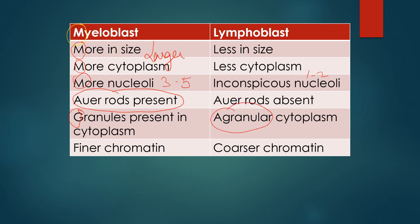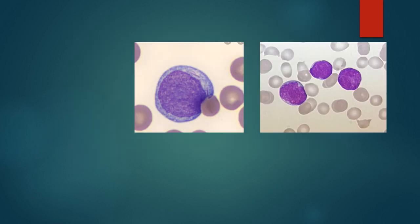Myeloblast has finer chromatin whereas lymphoblast has coarser chromatin. This is difficult to differentiate and it takes experience, but I will tell you these features and show you how to differentiate between them on microscopy.